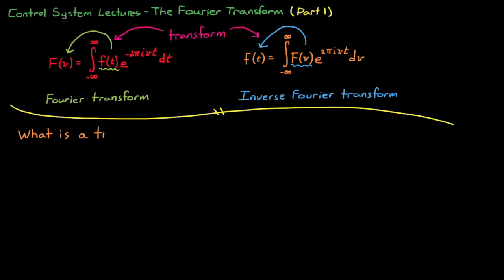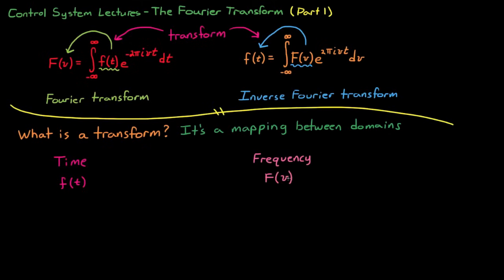So what exactly is a transform? A transform is a mapping between two different sets of data, or domains. In this case it changes information in the time domain into information in the frequency domain. Here I'm using the variable nu to represent frequency in units of hertz, or cycles per second. The data in these two domains look different and can even vary in length of the data, but it still represents the exact same information.